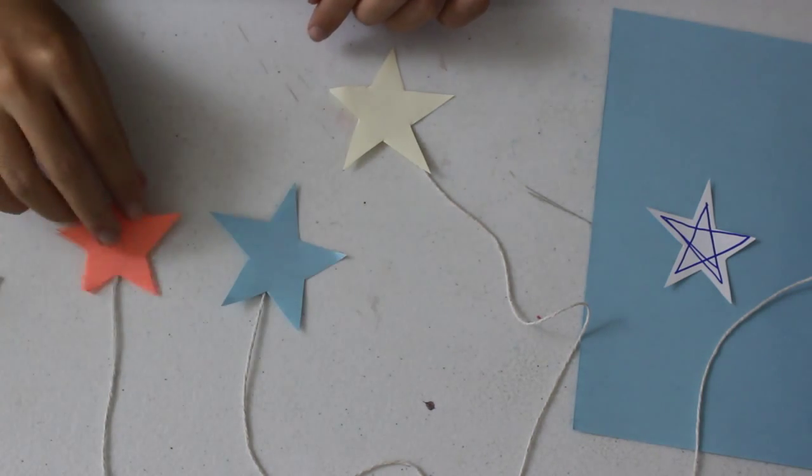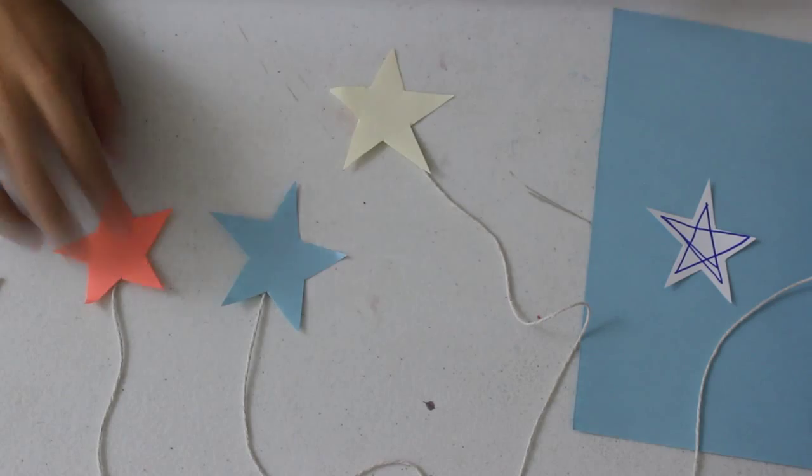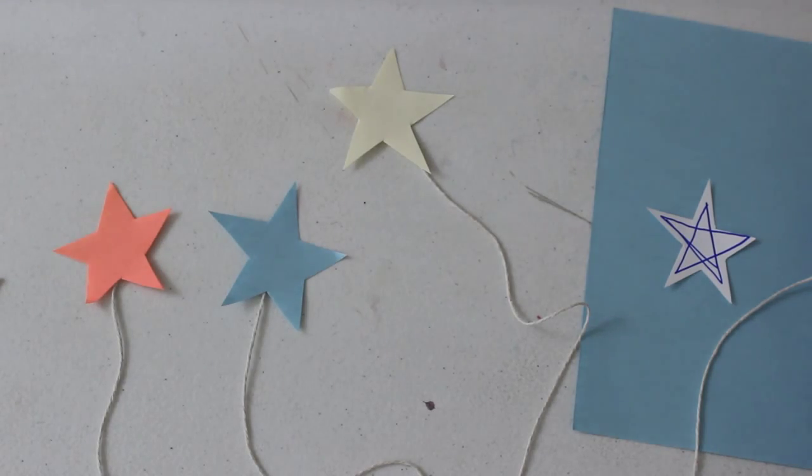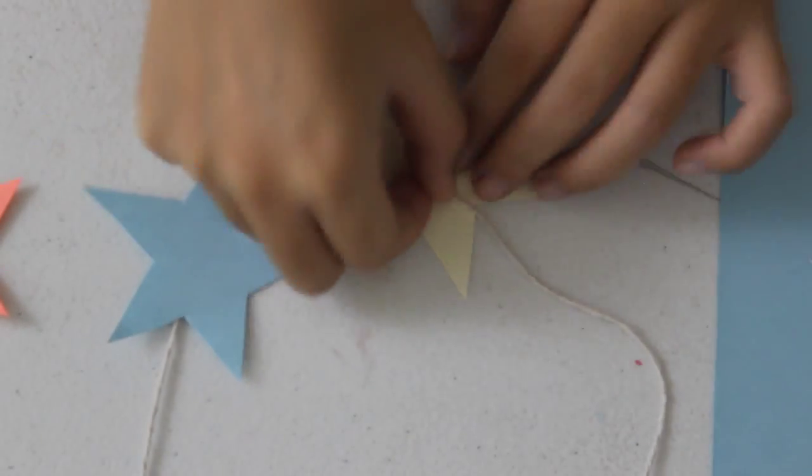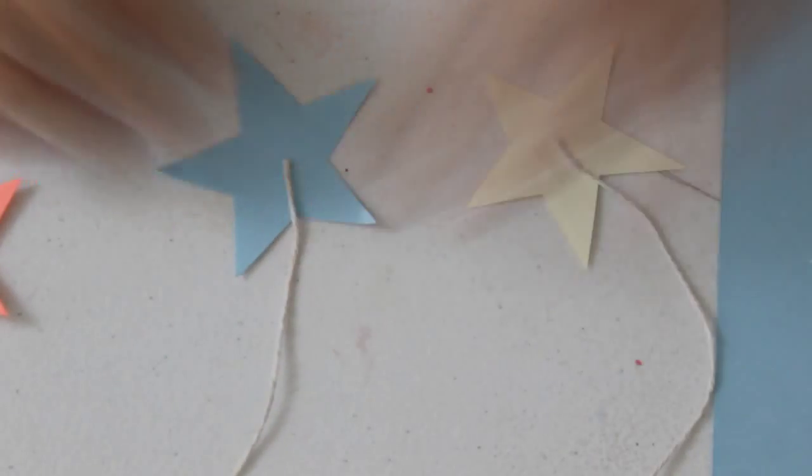Then arrange the stars however you want. I'm just alternating the star colors so they don't repeat. To attach the stars to the twines, you can either use glue or tapes. I'm using tapes here.